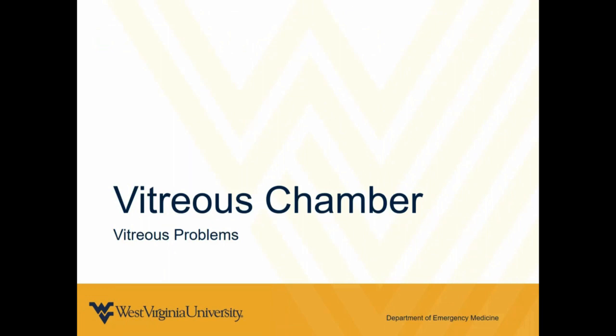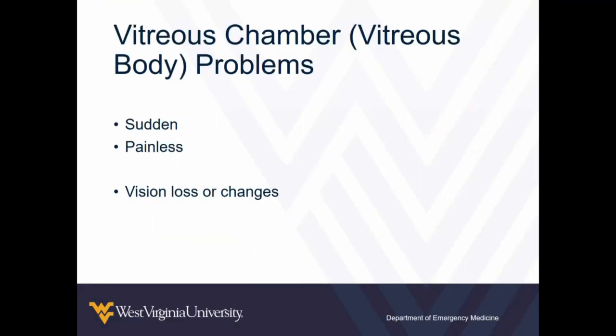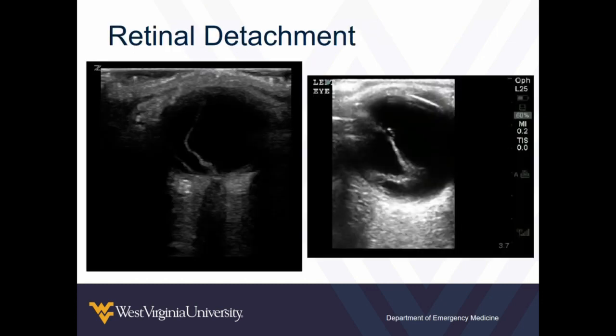The anterior things you can see with ultrasound are not as numerous, and a lot of those things you can see by physical exam. The things in the vitreous chamber are more difficult to diagnose by exam, especially if you're not able to dilate their eye, or if it's going to take a while and you want your diagnosis quicker, or if you don't even have the right equipment. I work in some emergency departments that don't even have a slit lamp to help us do a thorough exam. So ultrasound can be really helpful in these situations.